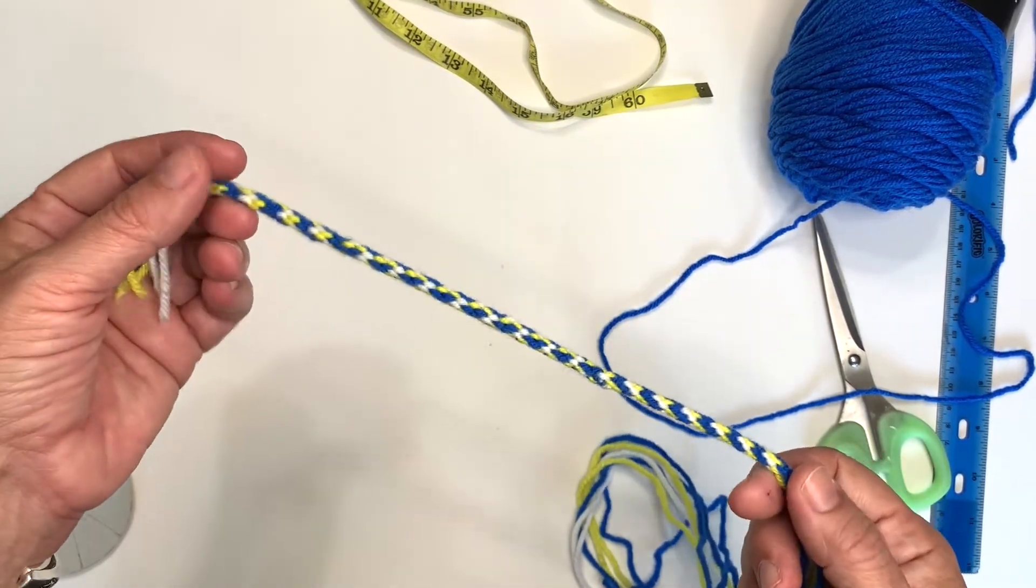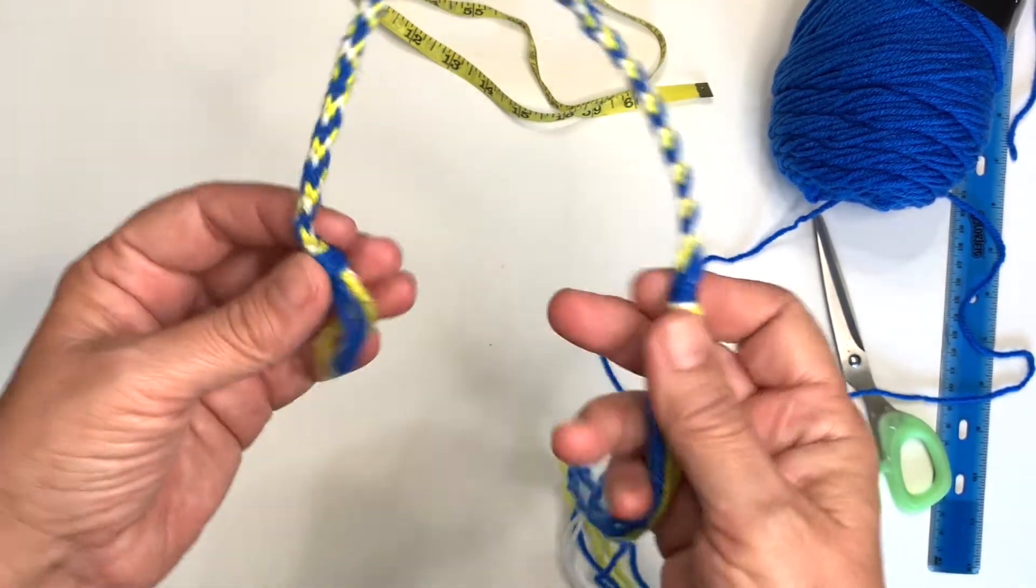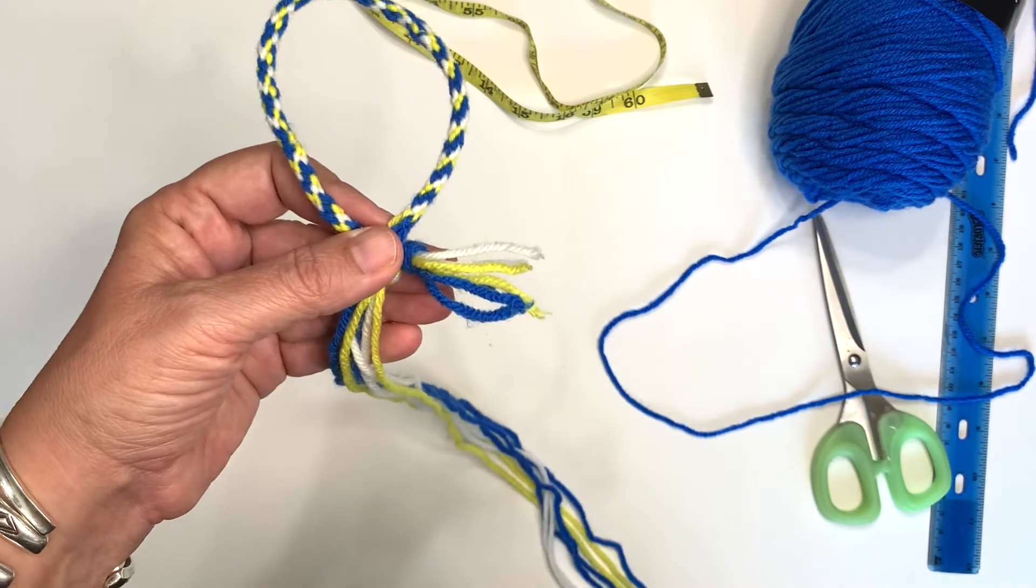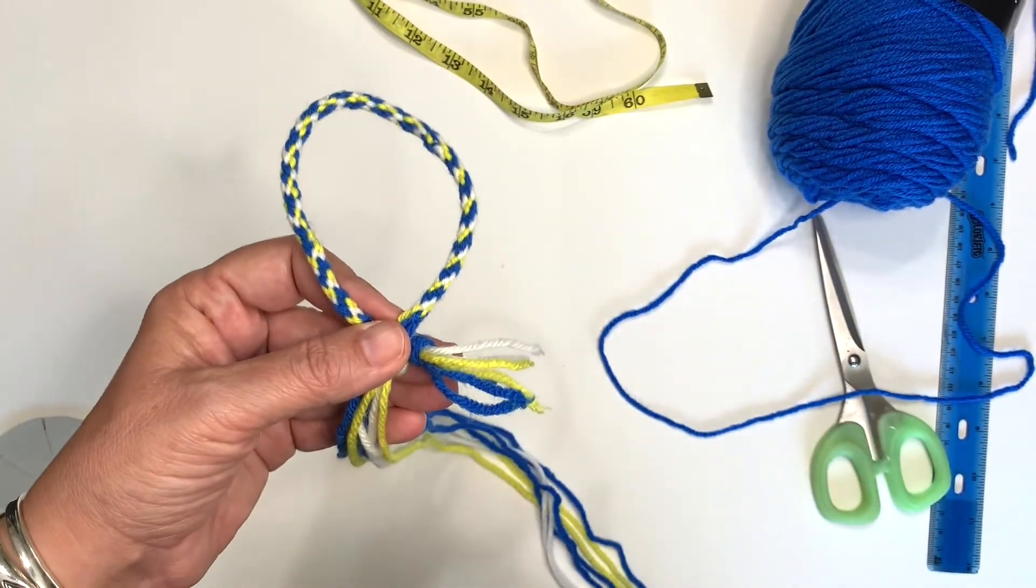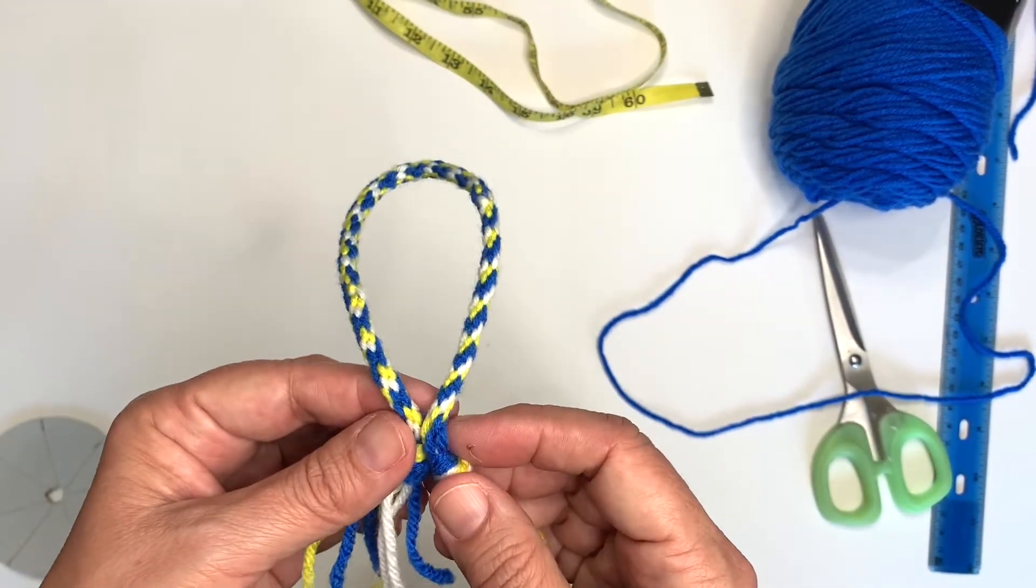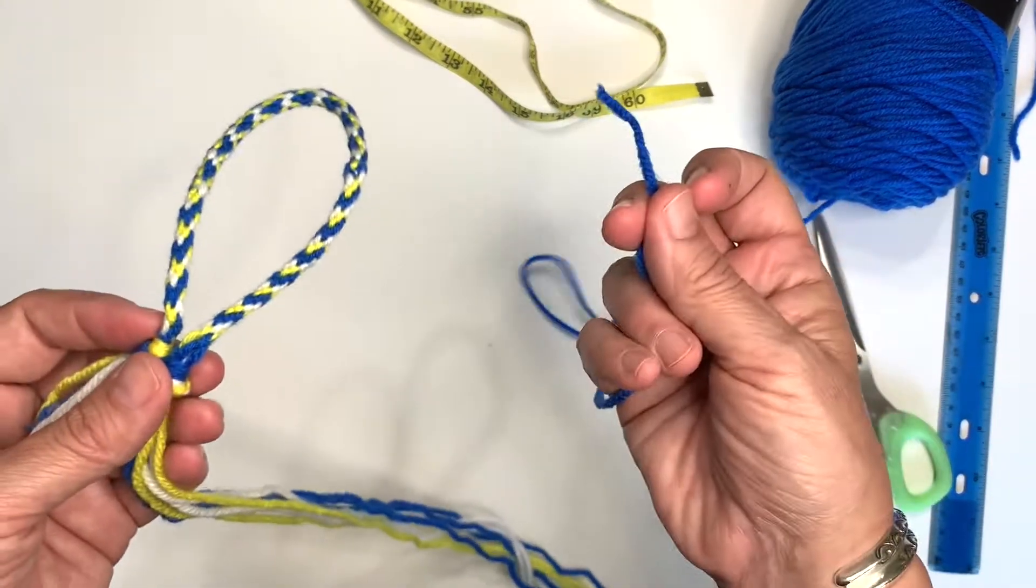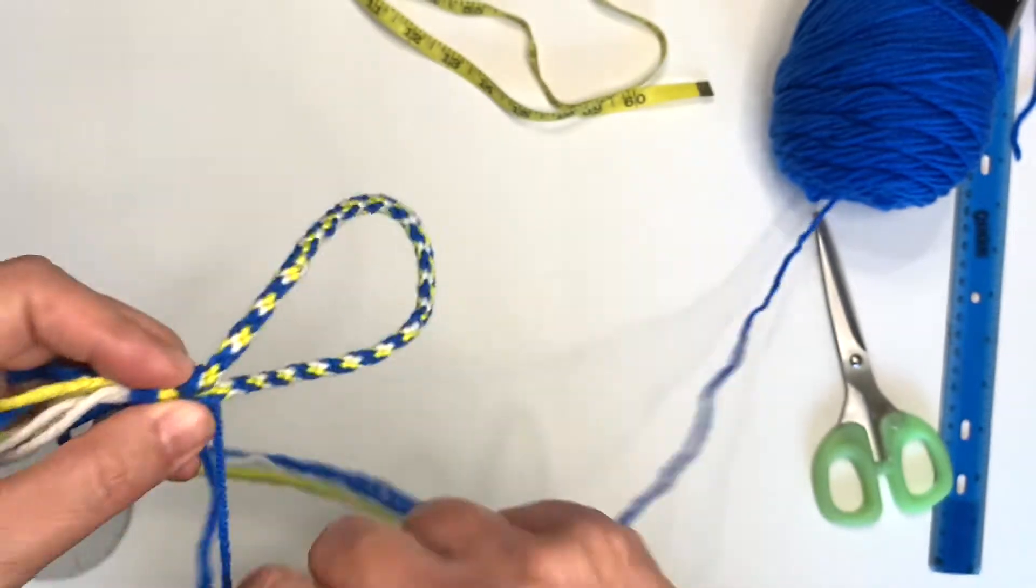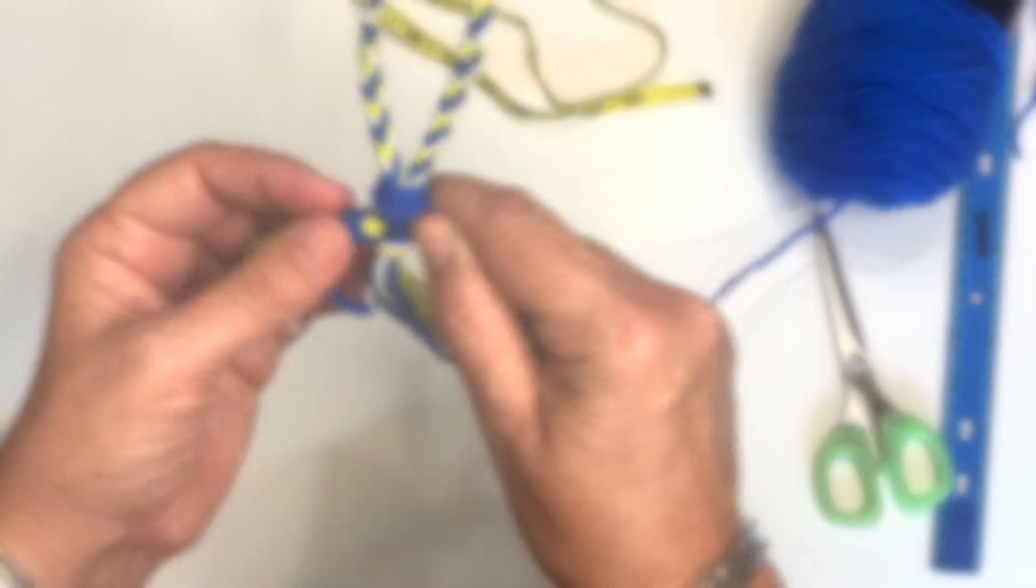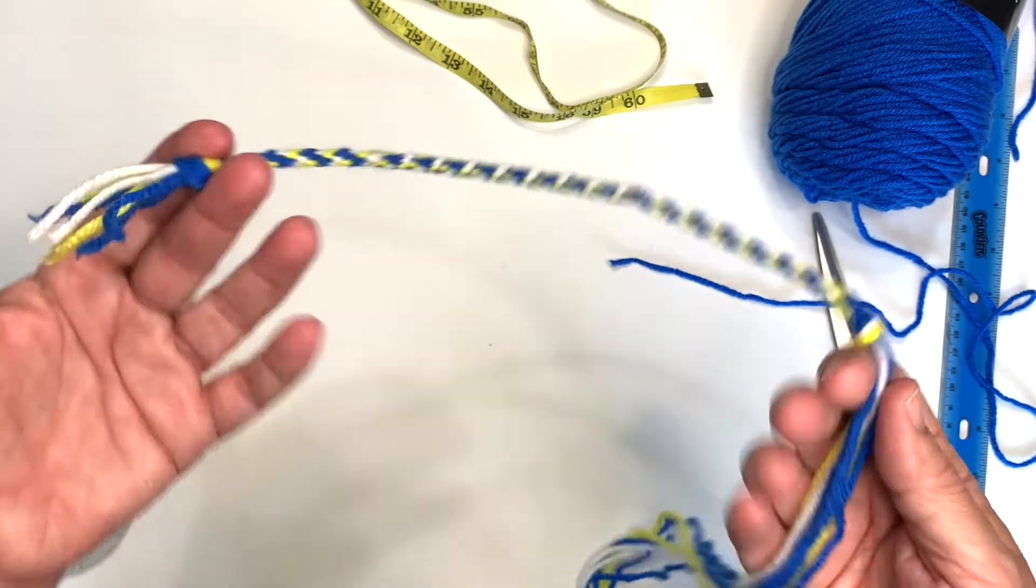So there are several different ways that you can finish this into a bracelet. One way would be to tie these ends together right here, and then you can trim this to any length that you like. Another way to finish this into a bracelet would be to hold these two ends together and get some more yarn, then leave a tail and wrap this tightly here and tie a knot. But the way we're going to finish it today is like this.